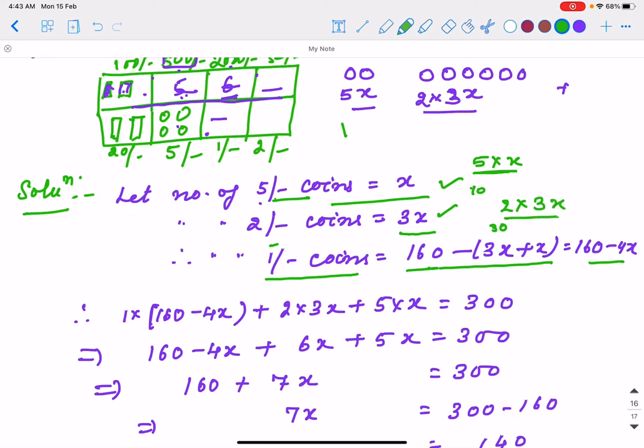That's the value from 2 rupee coins. Here, 1 times (160-4x) is the 1 rupee coin total amount, 2 times 3x is 2 rupee coin total, and 5 times x is 5 rupee coin total. You've seen in banks when you deposit cash, you write how many notes of each type you're submitting.